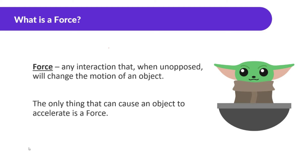Whenever an object is changing its motion — whether it's getting faster, slowing down, or turning — that's because a force is acting on it. Something can't suddenly get faster, slow down, or turn without a force. So the only thing that can cause an object to accelerate is a force.